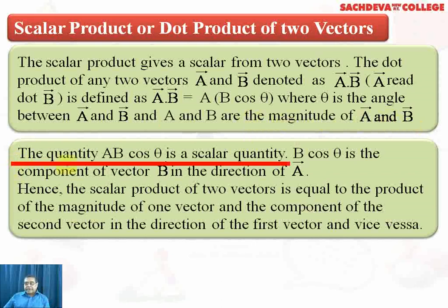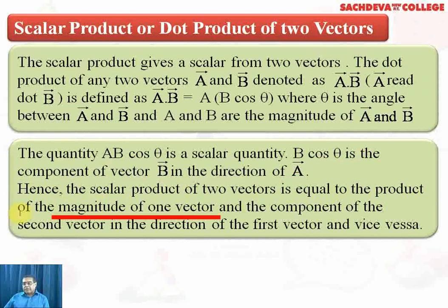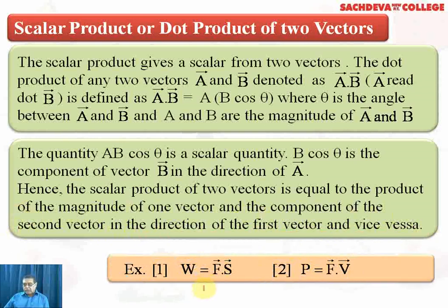We find the quantity AB cos theta is a scalar quantity. B cos theta is a component of the vector B in the direction of A. Hence, the scalar product of two vectors is equal to the product of the magnitude of one vector and the component of the second vector in the direction of the first vector, and vice versa. Now, we have an example: work is equal to the dot product of force and displacement.